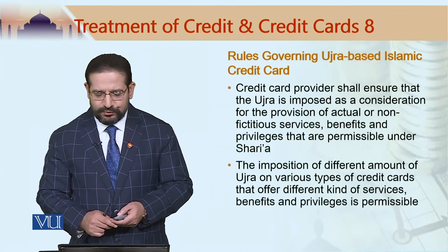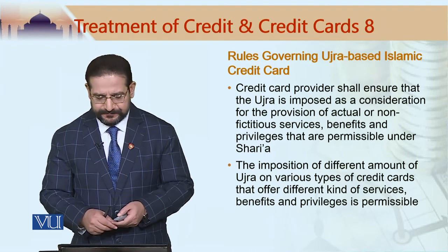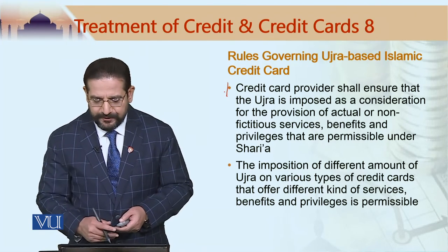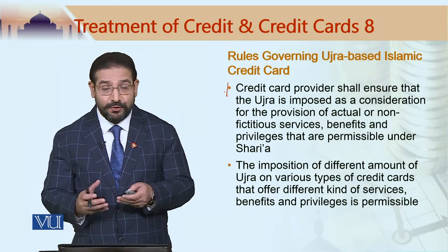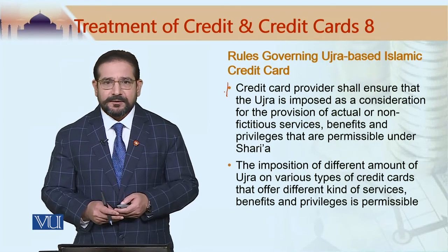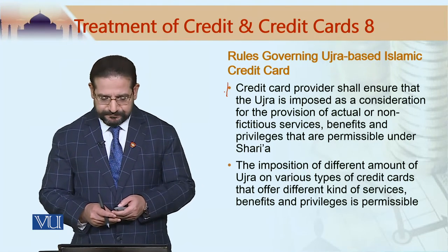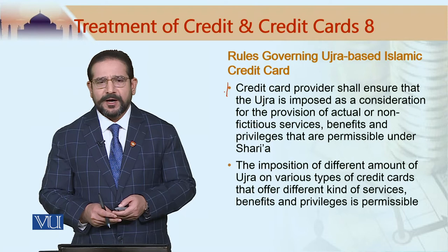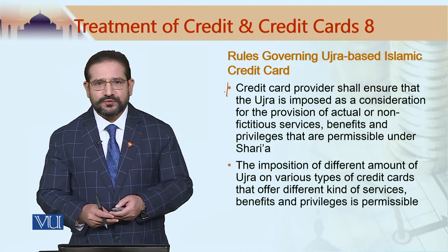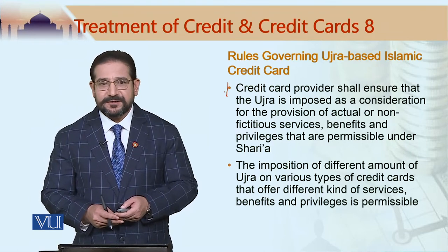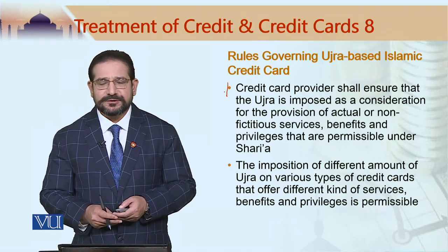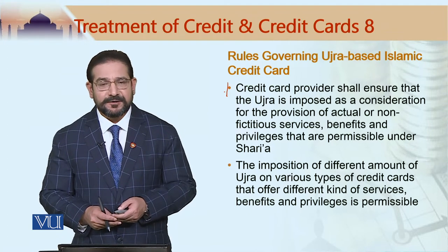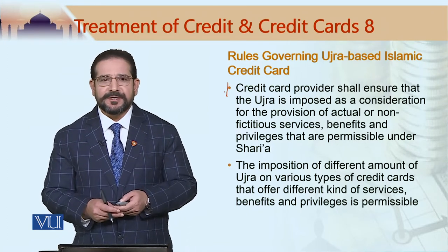What are the rules governing Ujra-based Islamic credit cards? Rule number one: the credit card provider should ensure that the Ujra is imposed only on services which are Sharia compliant — they are not fictitious services. What could those services be? It could be access to a business lounge at an airport, access to a golf course, or certain discounts offered by stores and vendors to holders of the Islamic credit card. These benefits should be Sharia compliant.